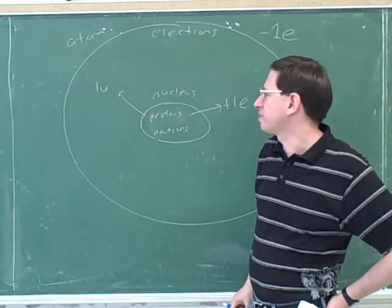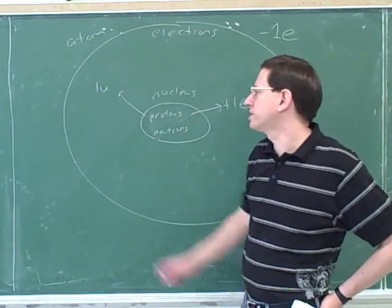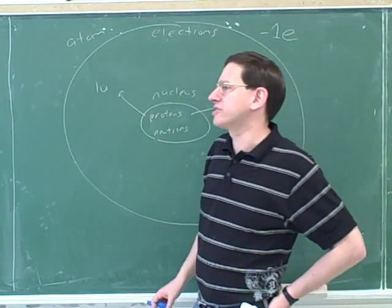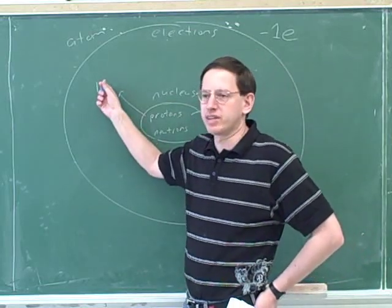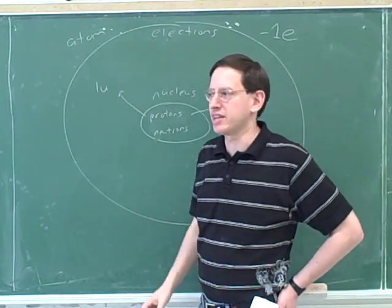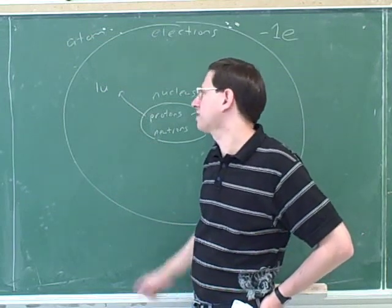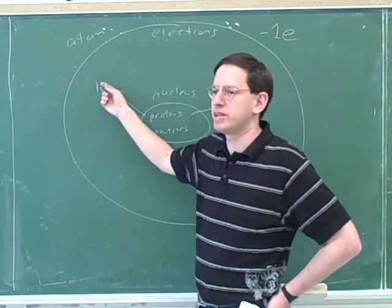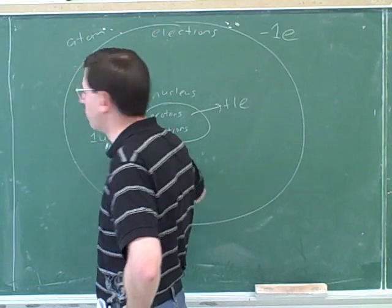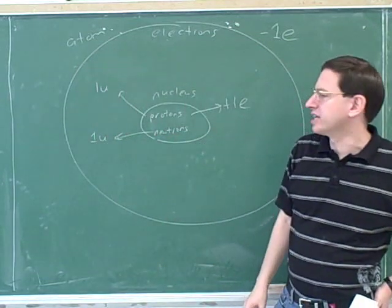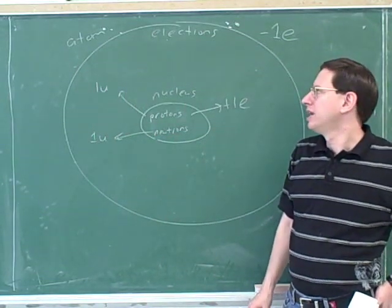So a proton has an atomic mass of one U. But what does U stand for? Well, it stands for something close to 10 to the negative 27 kilograms. But instead of writing that close to 10 to the negative 27 kilograms, it's easier just to write one U. So this would be the mass. And then the neutron would also be approximately one U. They're not exactly equal, but they're pretty close.